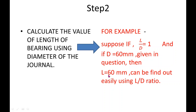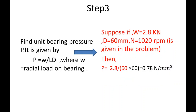In step number 3, we will find the unit bearing pressure using this formula. Here W is the radial load, D is the journal diameter, and L is the bearing length. Calculate the unit bearing pressure as shown.